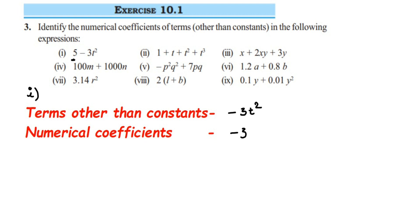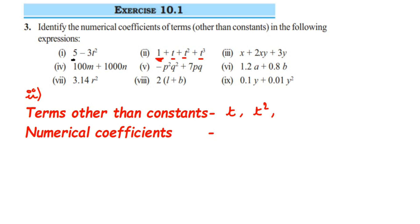Let's go to the second question. The expression is 1 plus t plus t square plus t cube. We should not take 1 because it's a constant. So we're going to take the other three terms: t, t square, and t cube. Now for these three terms, we have to find out the numerical coefficient.